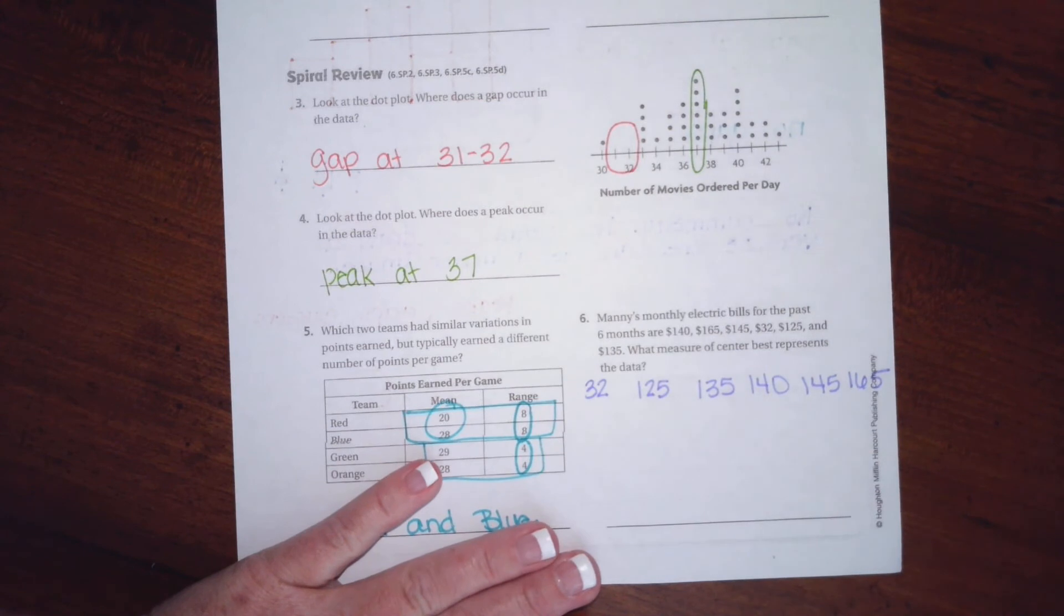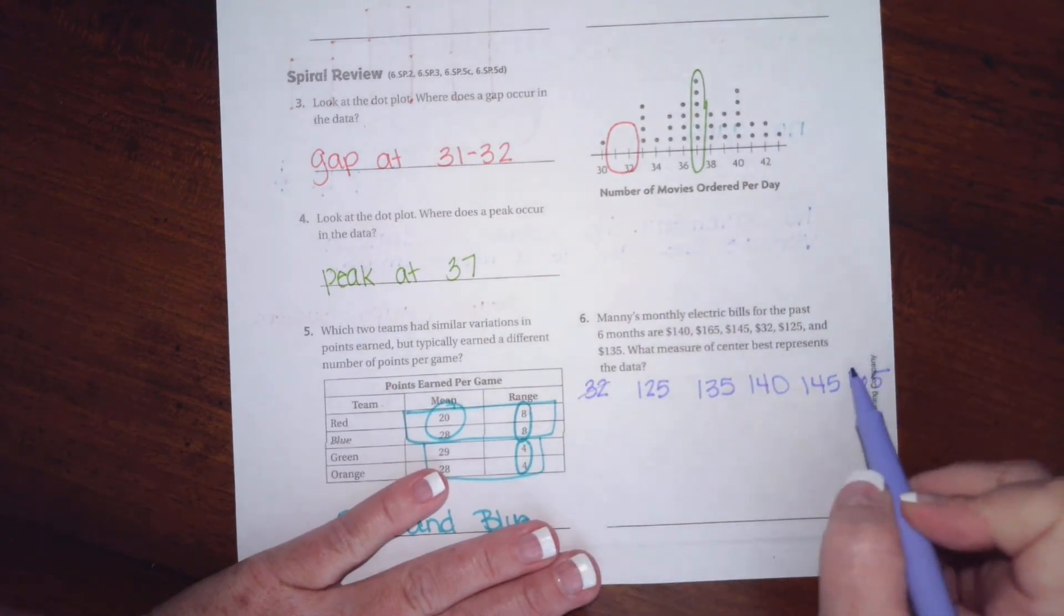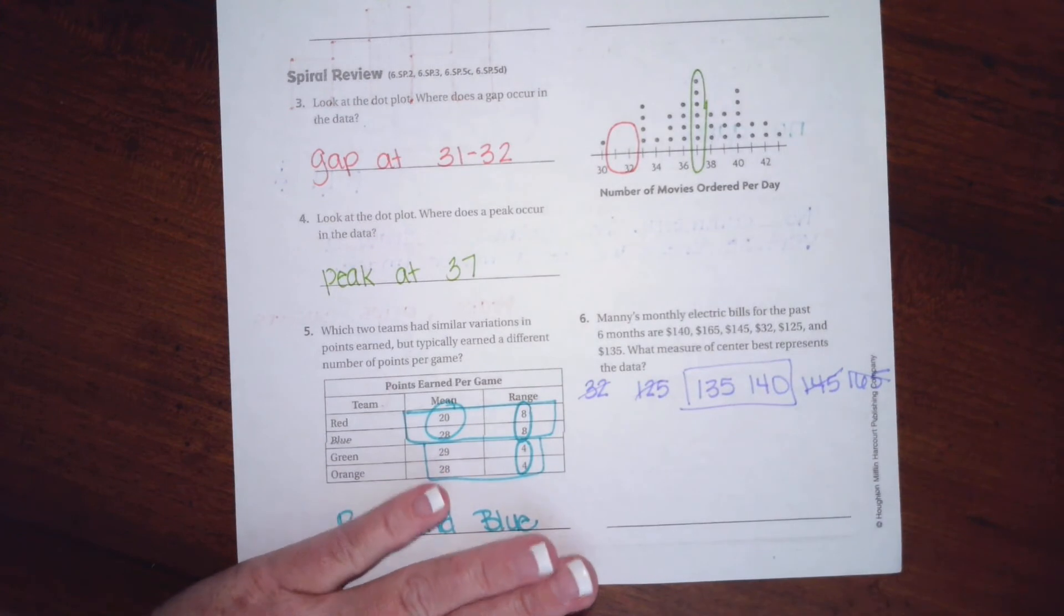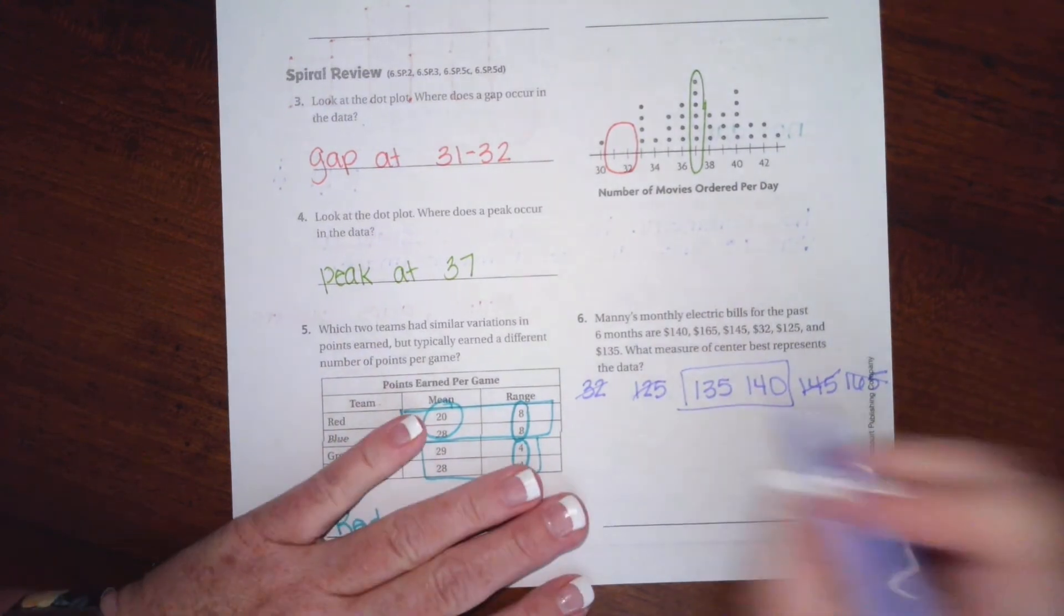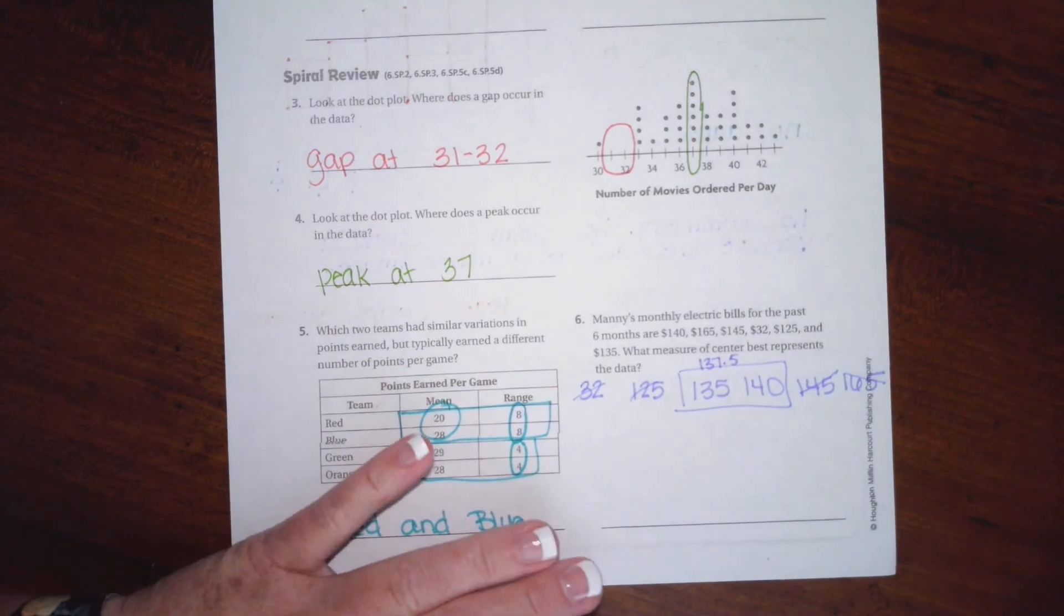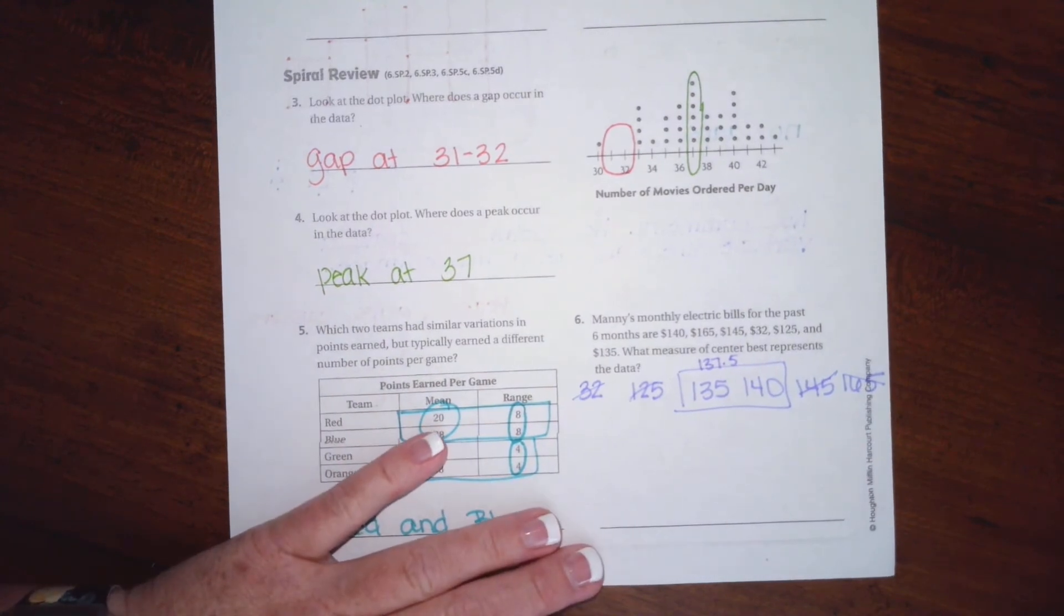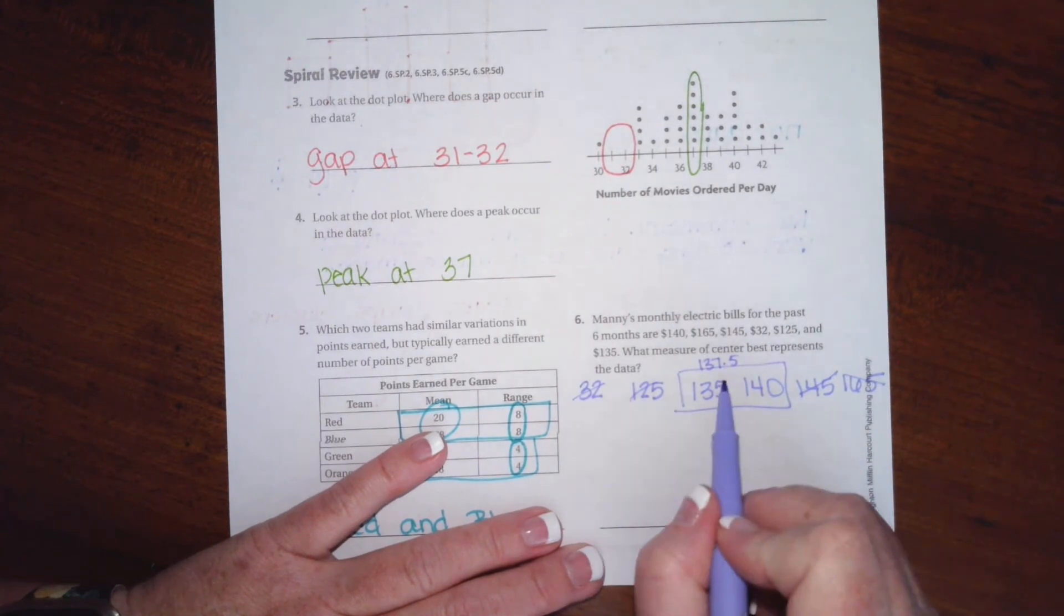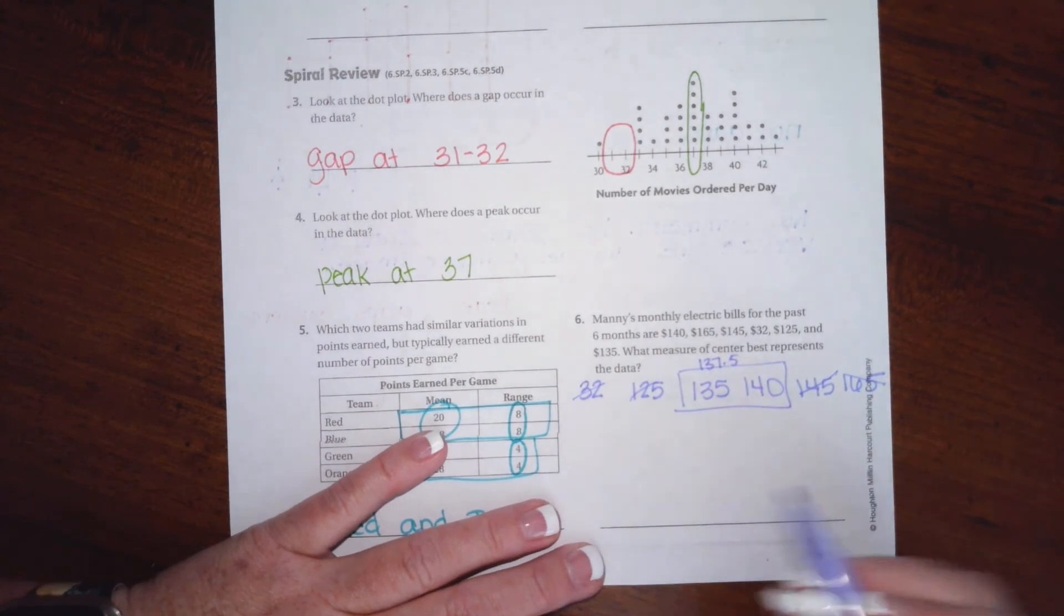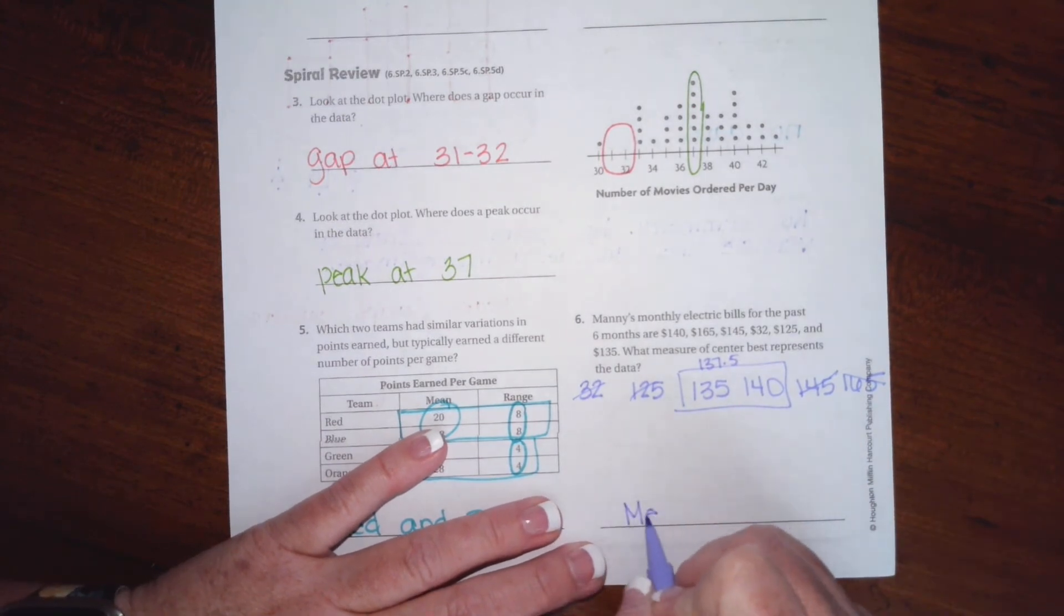Now finding the median, I'm going to cross off on the end until I get to the middle. So our median would be about $137.50. That's our median. Our median is a pretty good predictor of the center. So we're going to say median.